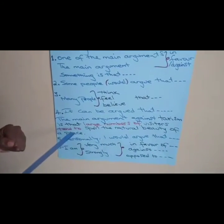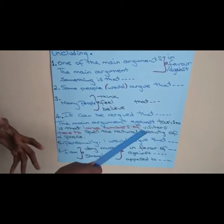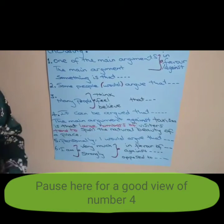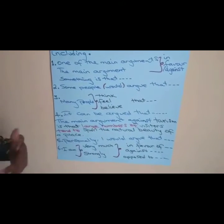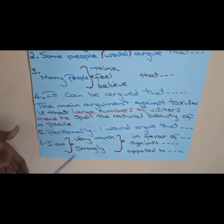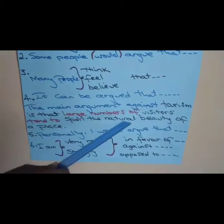The fourth point: 'it can be argued that.' For example, 'the main argument against tourism is that large numbers of visitors tend to spoil the natural beauty of a place.' There are many points you can discuss regarding tourism, but the major one is that visitors spoil the natural beauty — one of the negative factors of tourism.